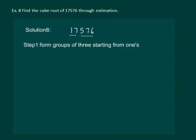Step 2 is to take the first group that is 576 and the digit in the 1's place that is 6 will be the 1's place of the required cube root. That means, 576 has given us that 6 is the 1's place of the required cube root.